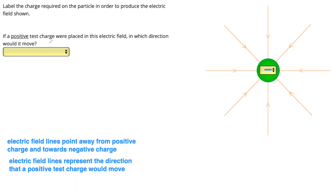The second question asks what direction would a positive test charge move if it were placed in the field? We know two things. First, the field lines represent the direction a positive test charge would move, so we know it's going to go in towards the center. We also know that positive and negative charges attract, so it makes sense that a positive charge placed here would move towards the center, towards the negative charge. You can use either of those rules to figure that out.